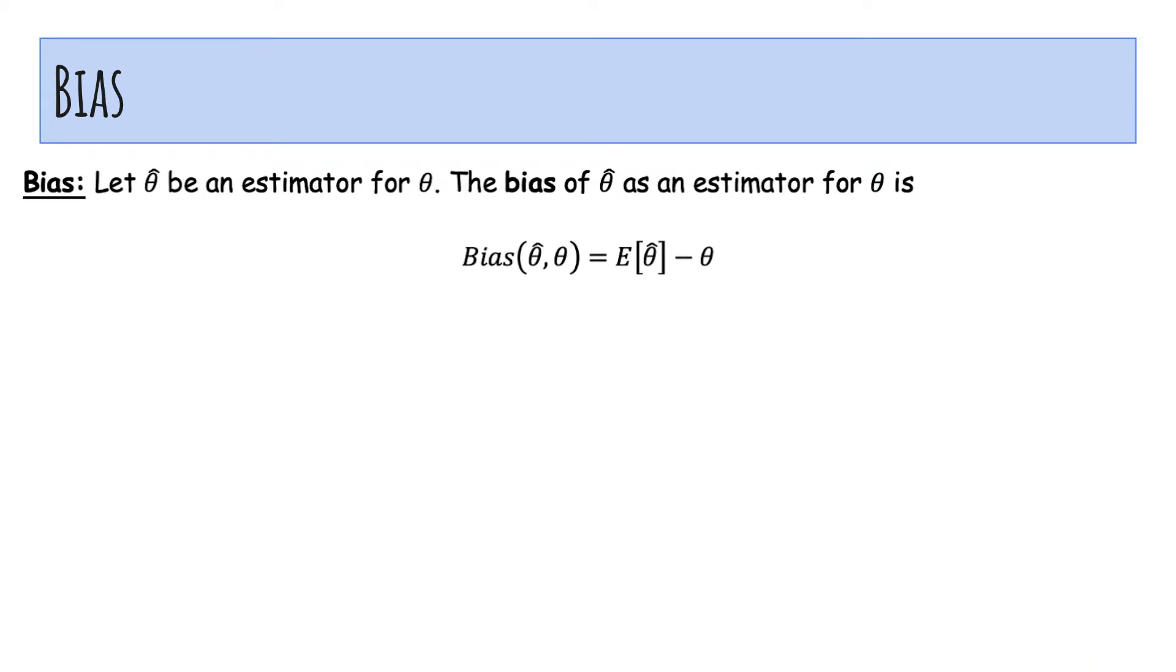So first is bias. So if theta hat is an estimator for theta, the parameter, the bias of theta hat is defined to be the expected value of theta hat minus theta. And so if the bias is zero, or equivalently, the expected value of theta hat is theta, right? That seems like a good thing. Then theta hat is an unbiased estimator of theta.